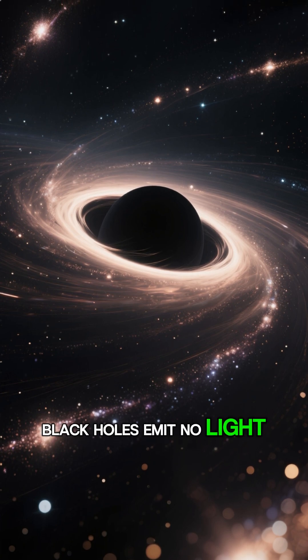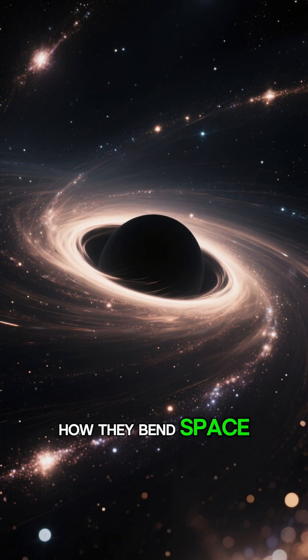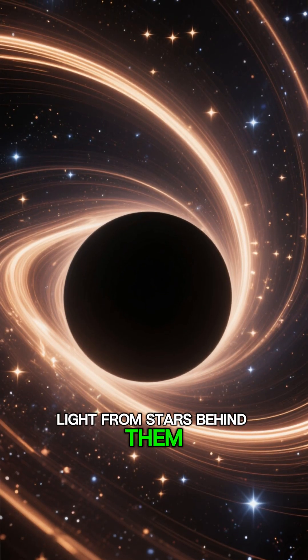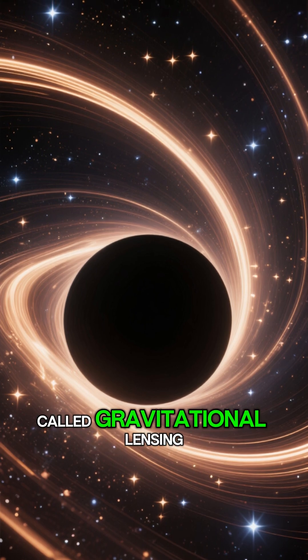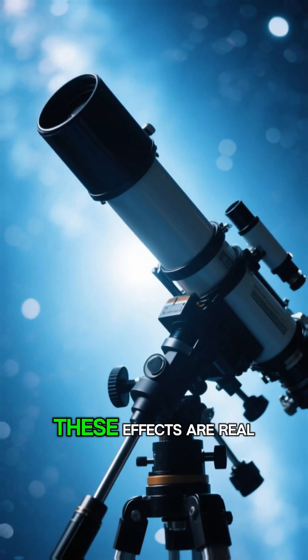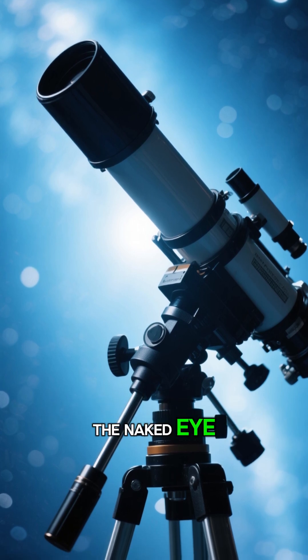Black holes emit no light. What we see instead is how they bend space. Light from stars behind them curves, creating subtle distortions called gravitational lensing. These effects are real, but impossible to see with the naked eye.